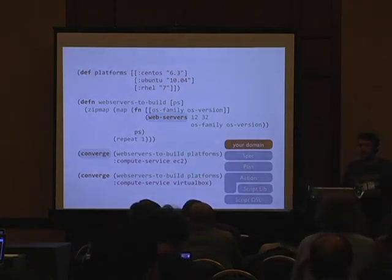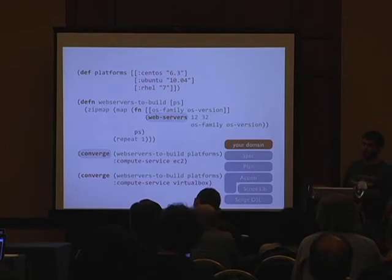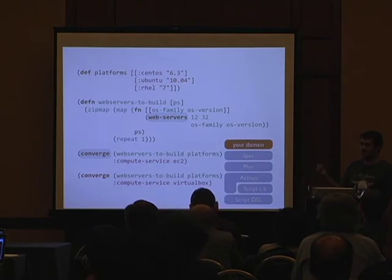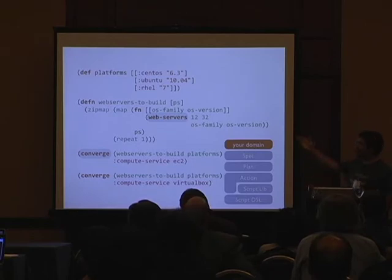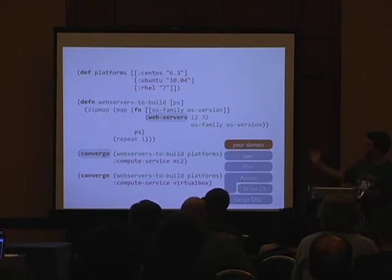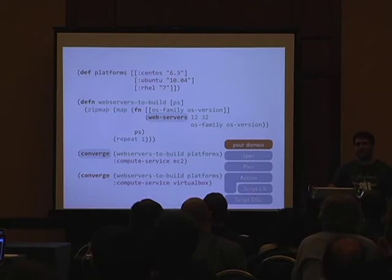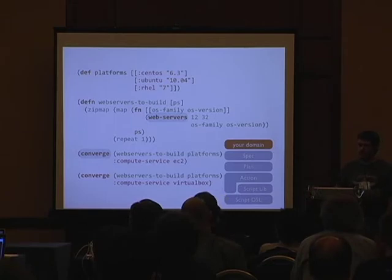Here's something you could do in QA. Using the functions we created before that create web servers dynamically, we want to spawn this web server on CentOS 6.3, Ubuntu 10.4, and Red Hat 7. We just create a function that creates a data structure representing what we want to do, then feed it into Pallet and say build these servers on Amazon EC2 or on VirtualBox — the code remains the same. This can be distributed across the company as a jar file put in your jar repository, so other Java libraries can just download it and use it right away.